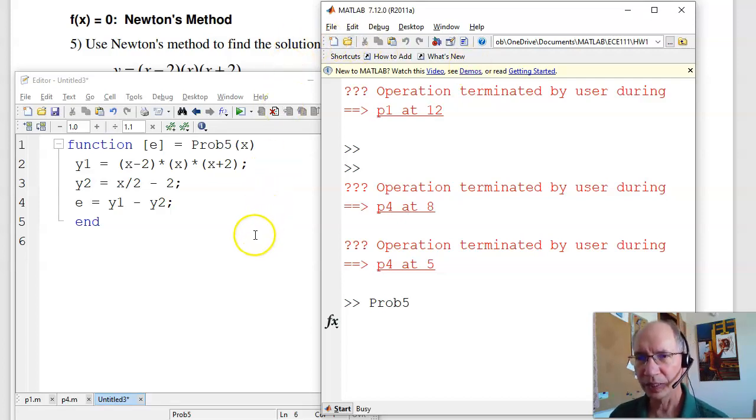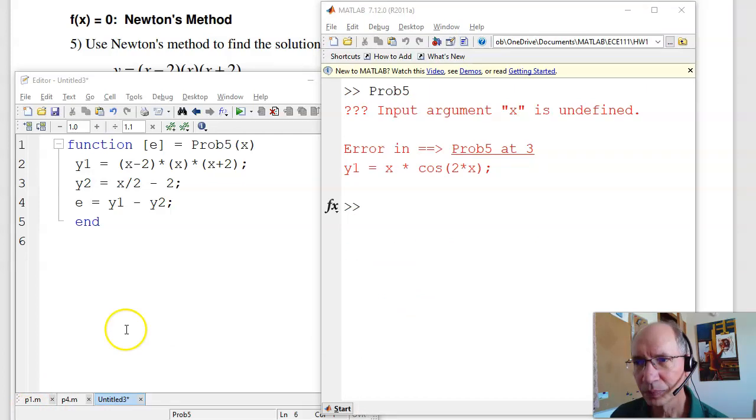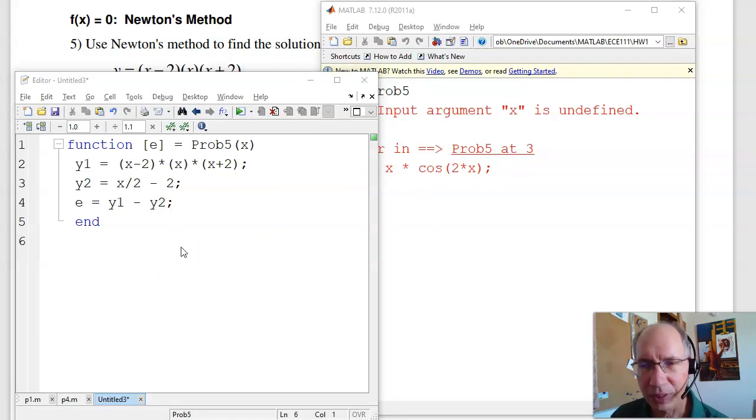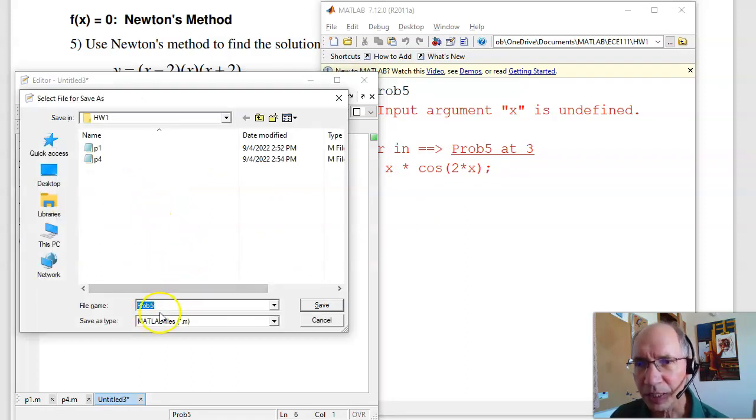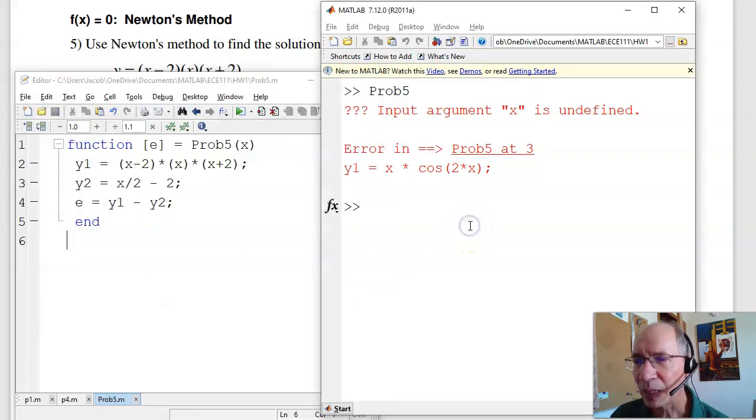Well, if I then save this, again, MATLAB is really slow while I'm recording. There it is, it says, I don't know what you're doing. If I then save this, I'll save it as the default name, problem five dot m.